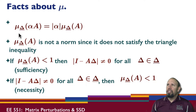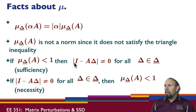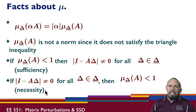Here are more properties of μ: if I scale my matrix by α, it scales the structured singular value by the absolute value of α. However, the structured singular value is not a norm — you can show examples where it does not satisfy the triangle inequality. If μ_Δ(A) is strictly less than one, then det(I − AΔ) is non-zero for all uncertainties in the set. Conversely, if det(I − AΔ) is non-zero for all uncertainties in the set, then μ must be less than or equal to one. This is necessity and sufficiency.